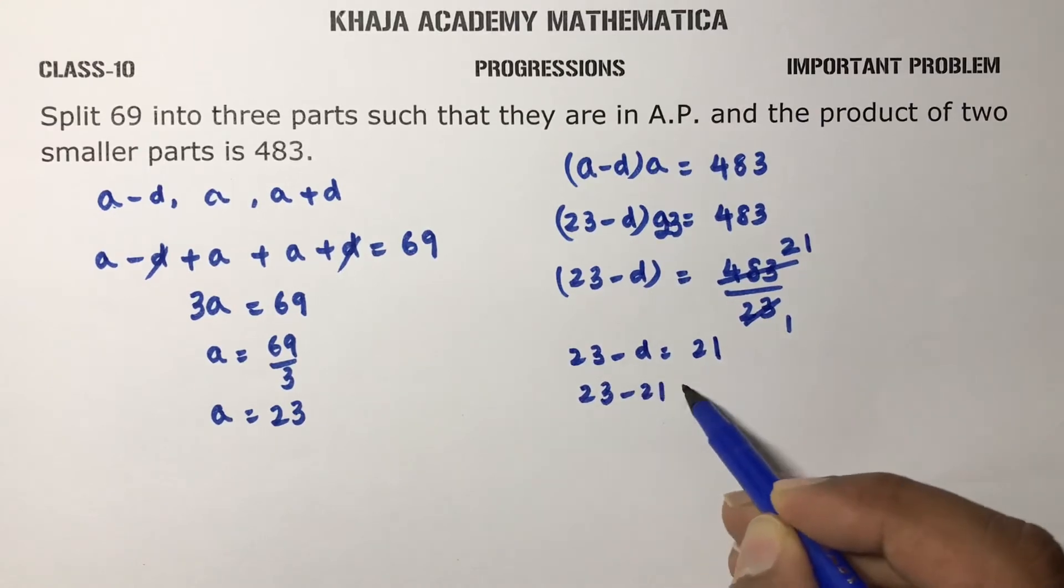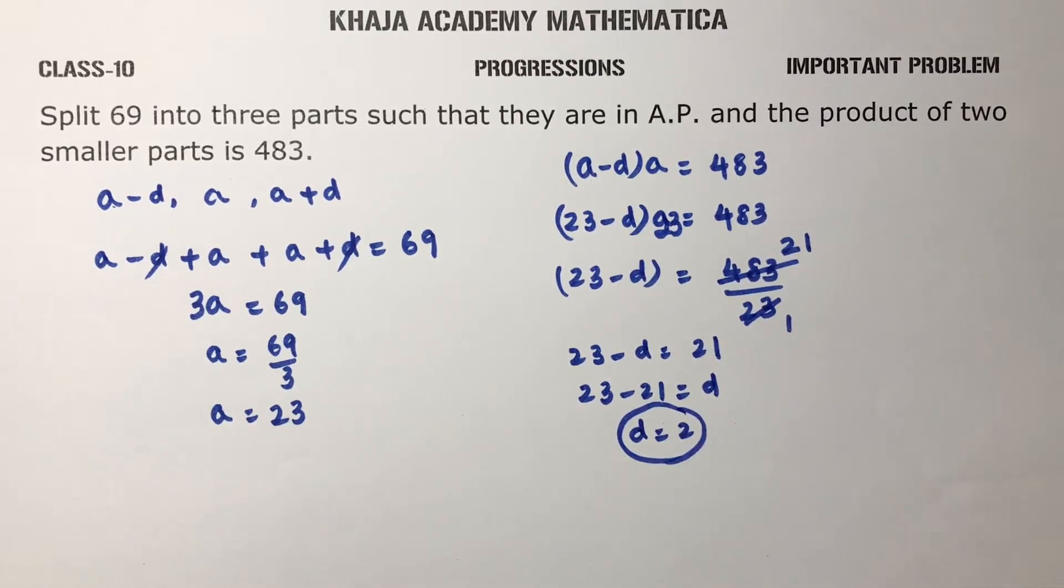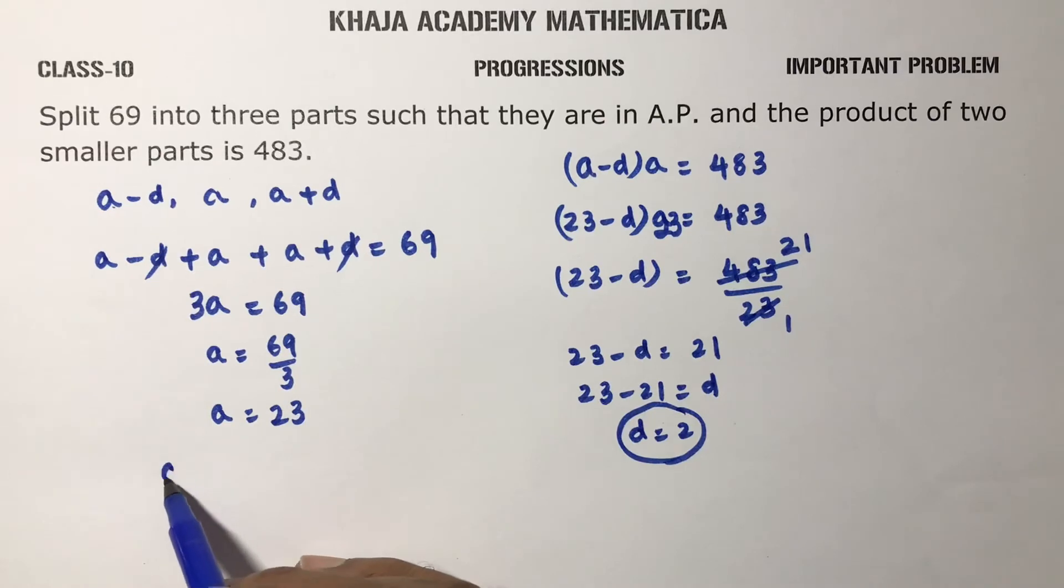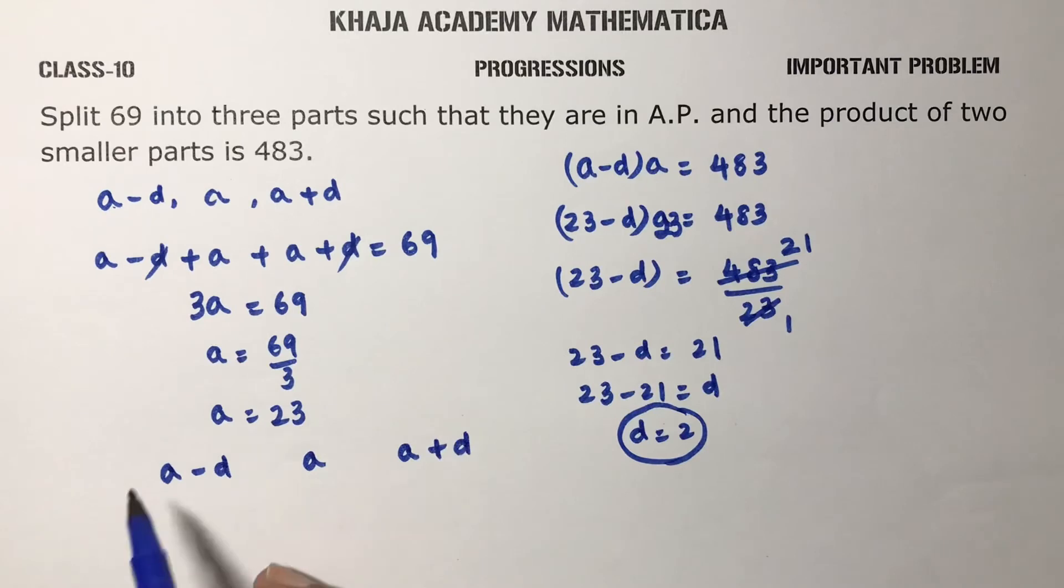So 23 minus 21 equals d, so d value is 23 minus 21 is 2. So you got a and d, so now three terms you can write like a minus d, a, and a plus d.